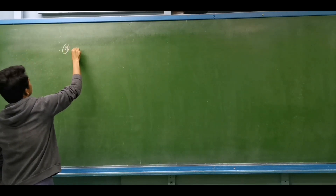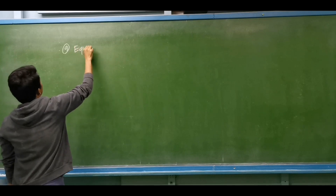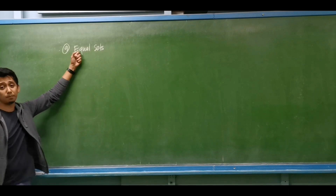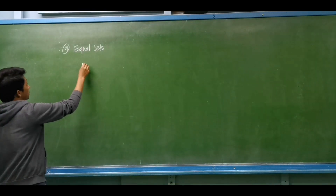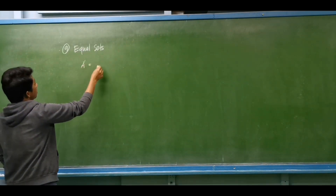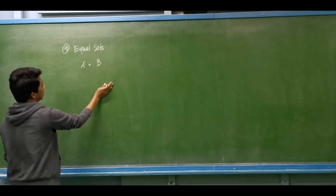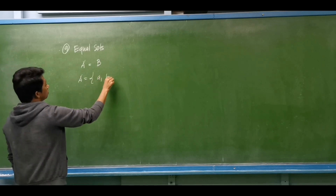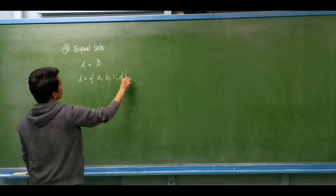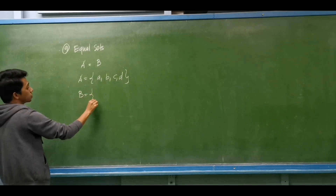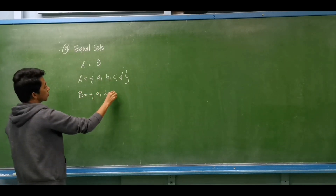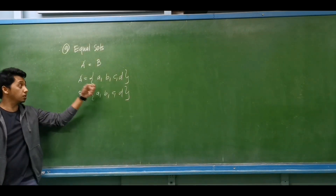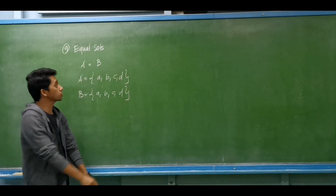Number nine: we have equal sets. Set A is equal to set B. The elements of set A are A, B, C, and D. Set B also has elements A, B, C, and D. Same cardinality, same elements — that is equal sets.